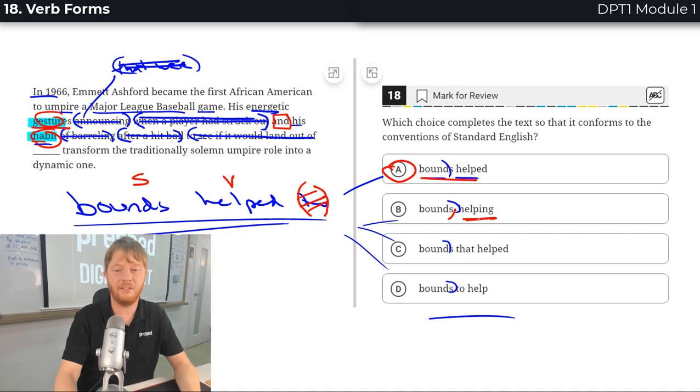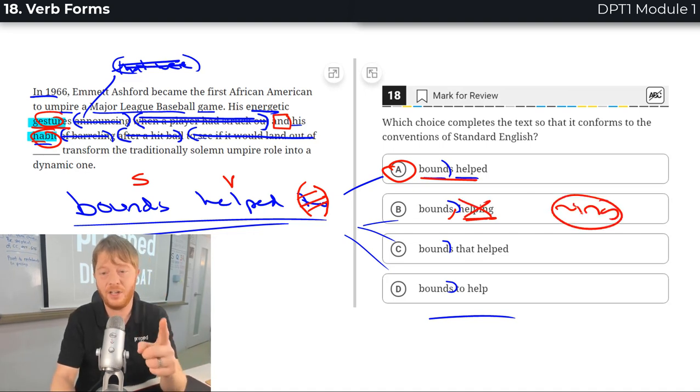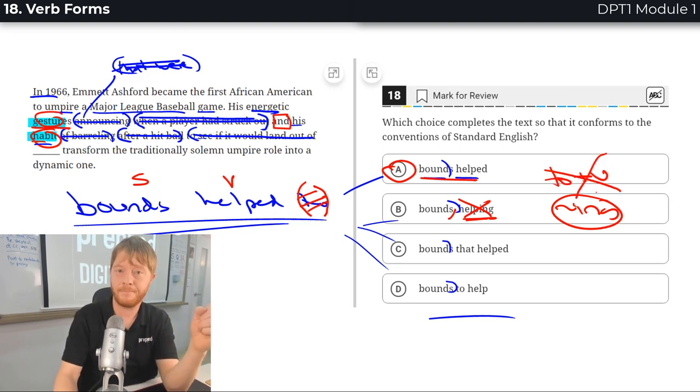Helping. Comma. Helping. We need a verb. Helping is not a verb. Ing words. Good note to make. Ing words are not verbs. Similarly, to plus verb is not a verb. That's why helping can't be the answer.